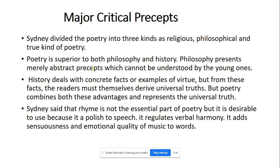Philosophy presents merely abstract precepts which cannot be understood by the young. It is impossible for young ones to understand the concepts of philosophy. History deals with concrete facts or examples of virtue, but from these facts the readers must themselves derive universal truths. Poetry combines both these advantages and represents universal truth.